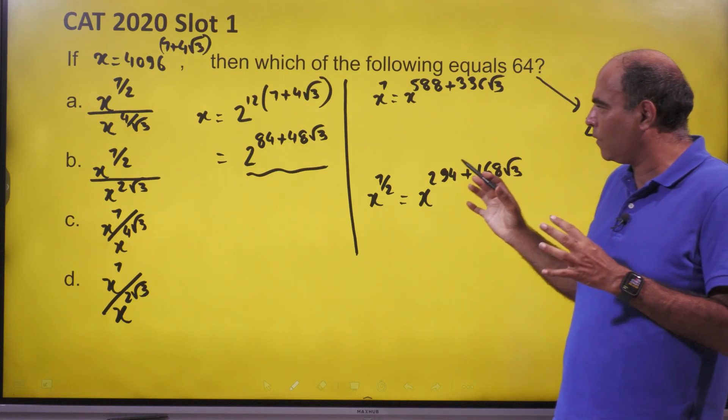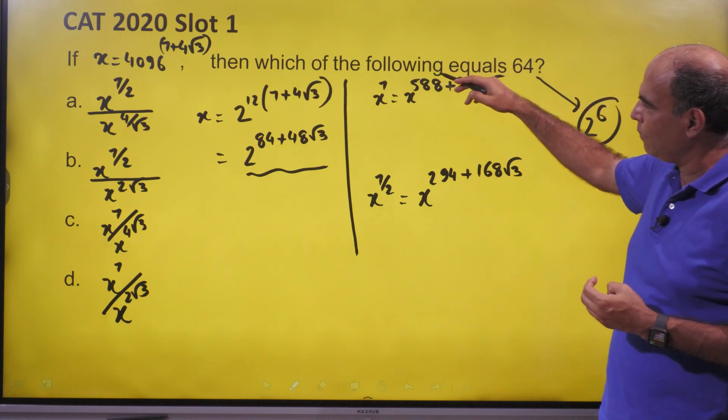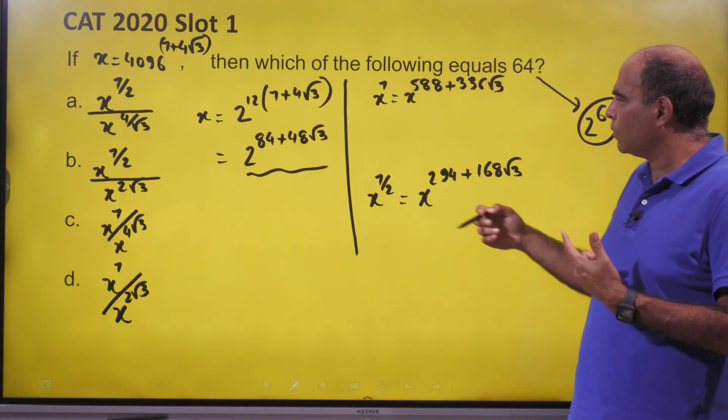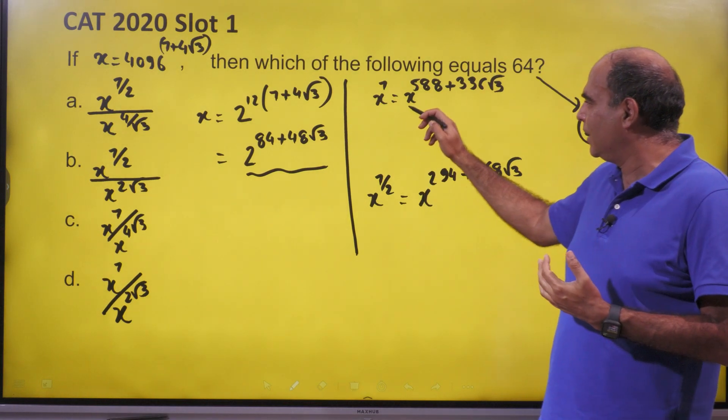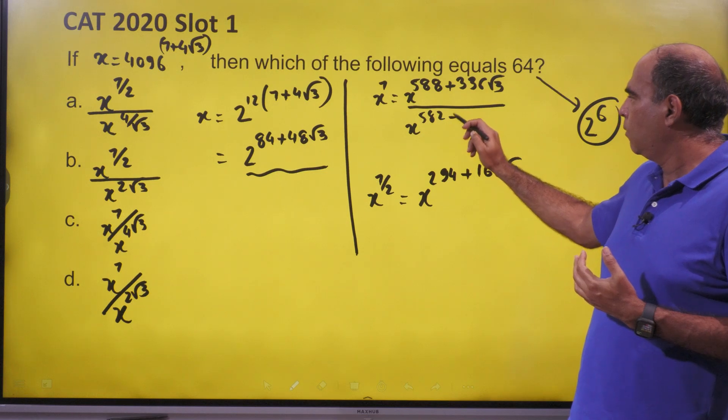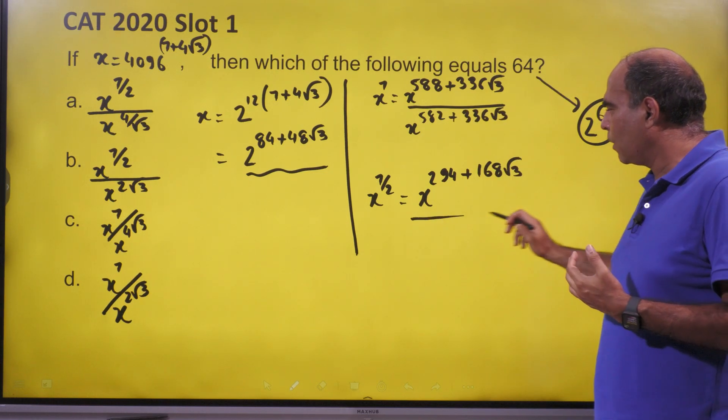Once you have that, the target is to get to 2 raised to 6. The question is asking which of the following equals 64. So if I want to get 2 raised to 6, I have to divide this by x raised to 582 plus 336 root 3 exactly, or I have to divide this by x raised to 288 plus 168 root 3.